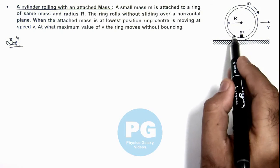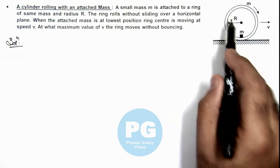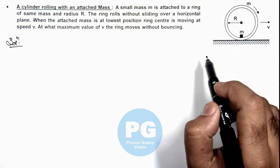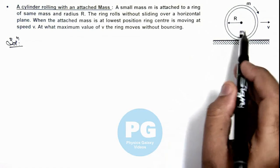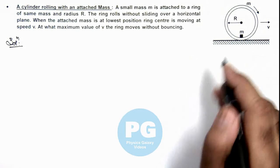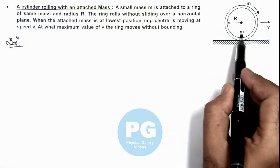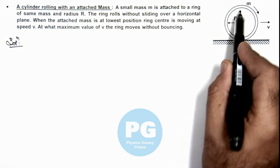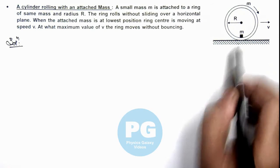When the upward component of that centrifugal force exceeds the weight of ring plus block it may bounce. To avoid bouncing, we can say when it reaches the top, till that moment this normal reaction at the bottom must not be zero.